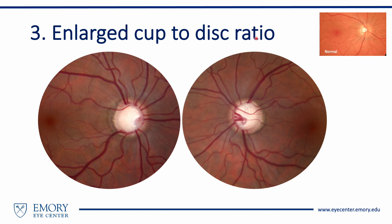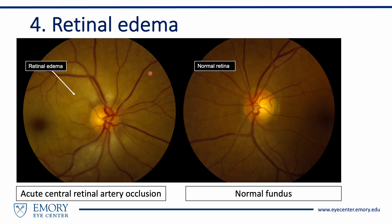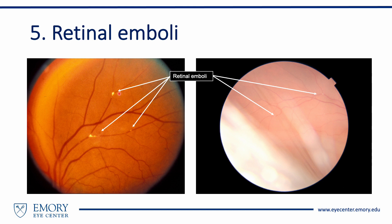The cupped optic disc: compared to the normal optic nerve head, the cup size appears to be increased in both the right and left optic nerves. One can estimate the cup-to-disc ratio to be about 0.8 in the right eye and 0.9 in the left eye. Retinal edema can be observed as a fluffy white appearance of the retina due to loss of transparency, usually indicating retinal ischemia. Retinal vessels must be examined for embolic materials such as cholesterol or fibrin platelet, which can indicate cardioembolic or atheroembolic sources.